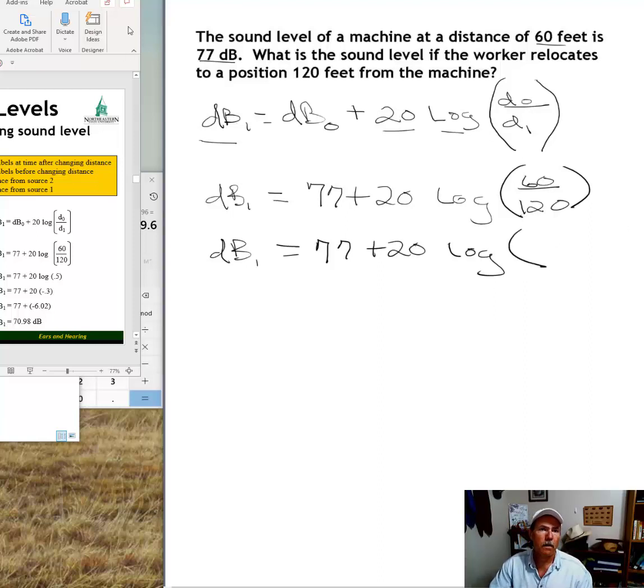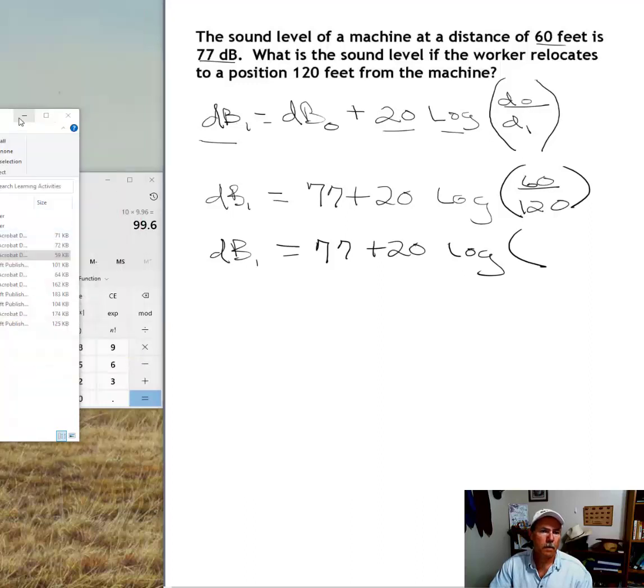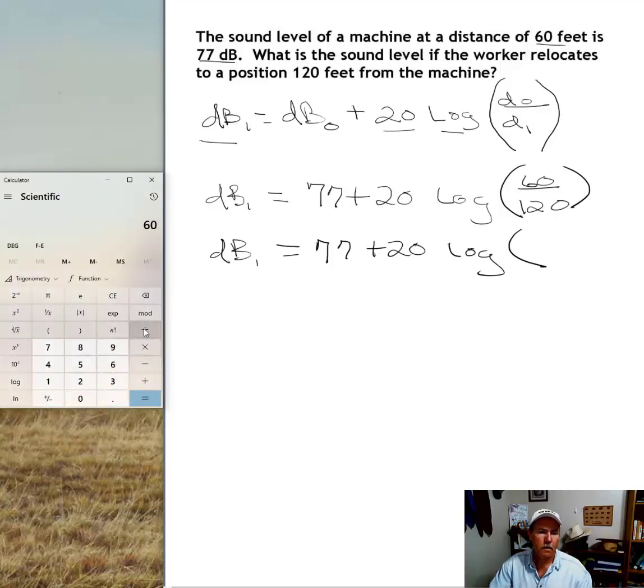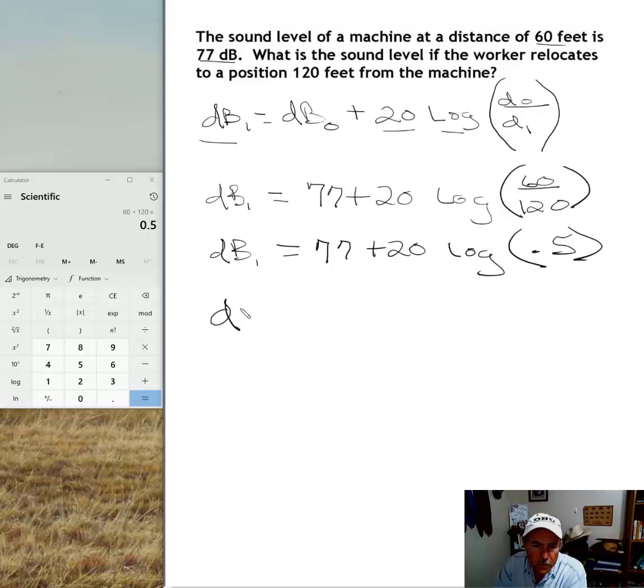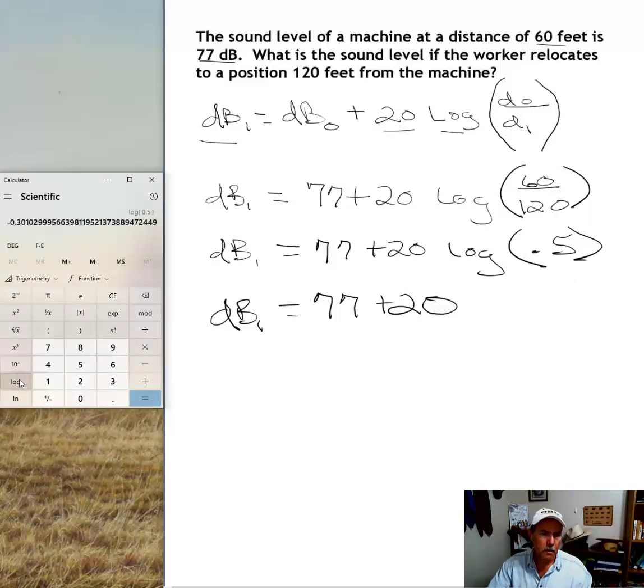Okay, 60 divided by 120 equals 0.5. So now we want to take the logarithm of 0.5. Let me go ahead and write out the next iteration here. The log of 0.5 is negative 0.3. It's actually negative 0.301. I'm just going to round it to negative 0.3.